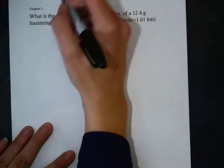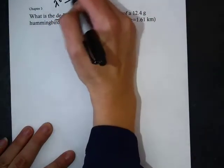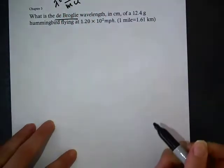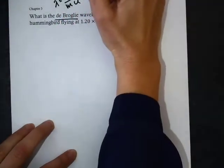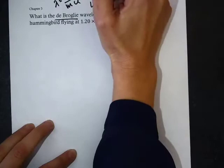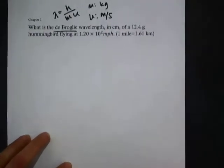When I'm looking for the wavelength of something with mass, it's called the de Broglie wavelength. It's different than the speed of light wavelength, which is just c equals lambda times nu. This is a different relationship.